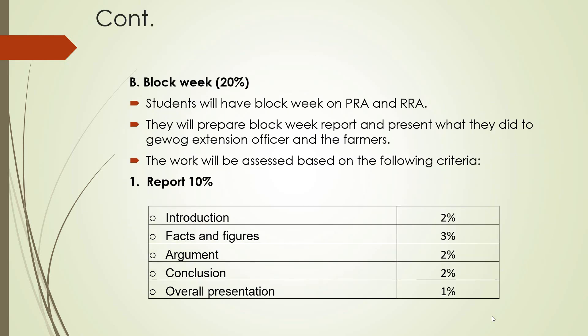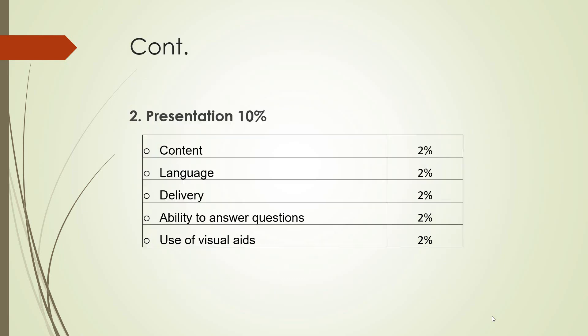Block week will be worth 20%. Students will have a block week on PRA and RRA. They will prepare a block week report and present what they did to the extension officer and the farmers. The work will be assessed based on: report out of 10% — covering introduction, facts and figures, argument, conclusion and overall presentation — and presentation out of 10%, assessed on content, language, delivery, ability to answer questions, and use of visual aids.